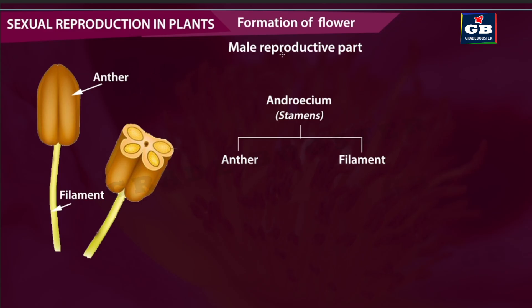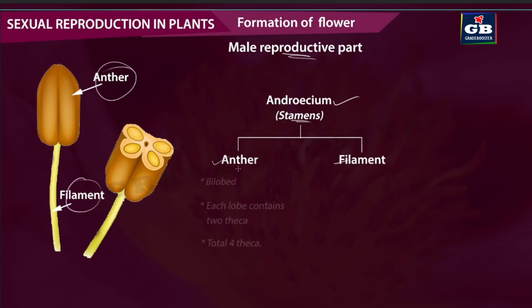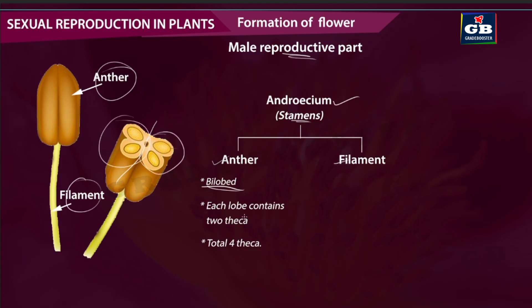The male reproductive part of the flower is called androecium — meaning all the stamens. Each stamen consists of two parts: anther and filament. Looking at the structure of the anther, the anther is bilobed — it has two lobes. Each lobe contains two sections, making a total of four lobes, referred to as thecae. Inside the theca we can see the microsporangium.